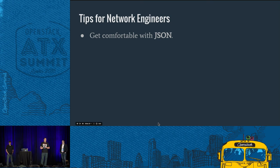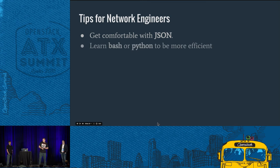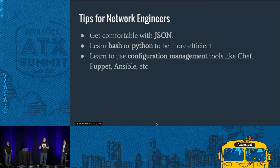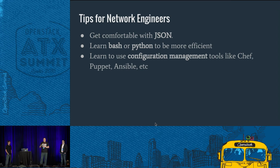Get comfortable with the JSON format — that's not a natural thing for network engineers. It looks ugly at first, but after a while you start to embrace it, and it becomes more beneficial once you can string it together with a Python script to parse it and be more efficient. And like Ryan said, learn to use the configuration management tools — not an Excel config generator that you paste into a device and hope it takes everything you entered. We've got to move past that.